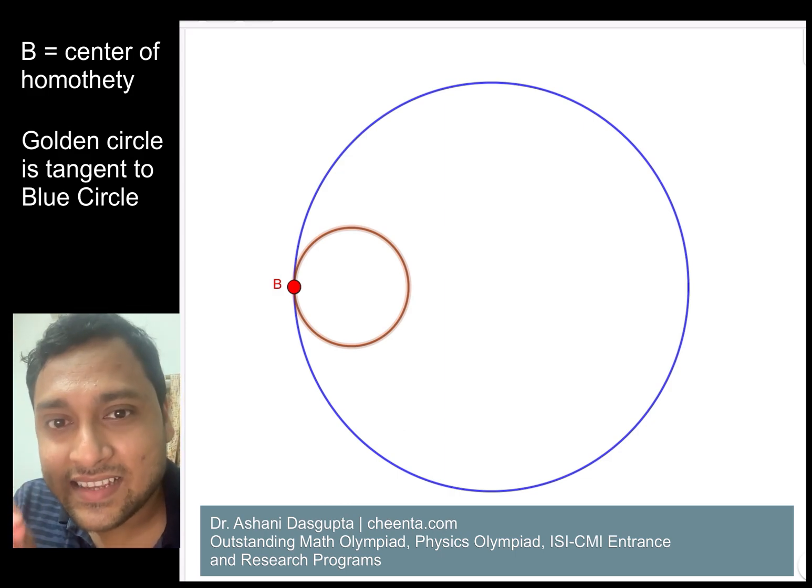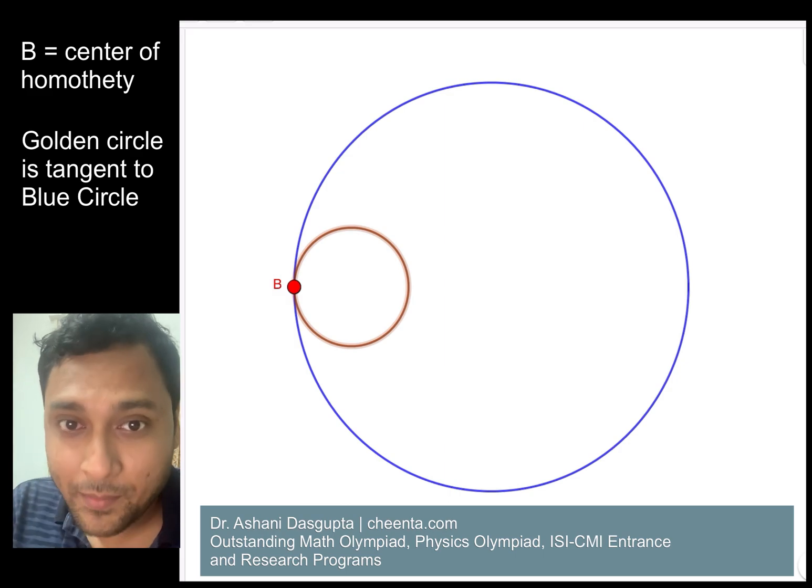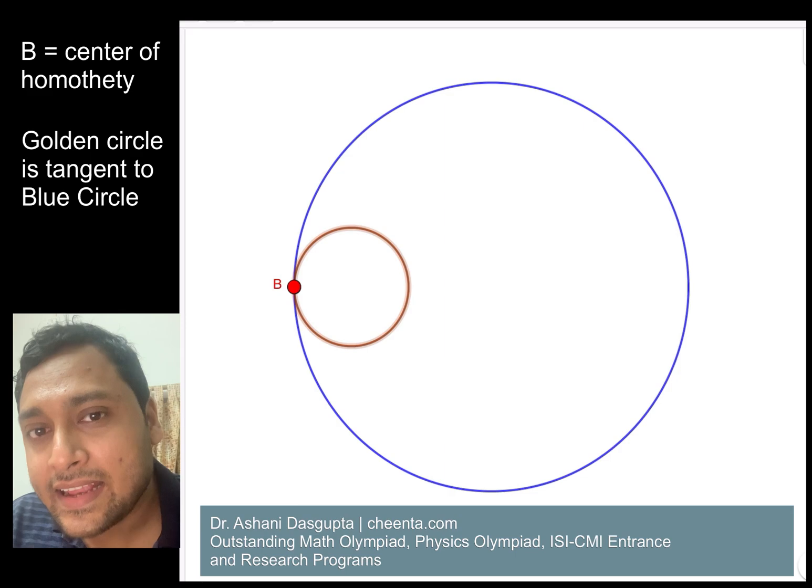So this golden circle is just touching the blue circle at one point, that is the point B. The main idea is this: that this golden circle will sort of grow into the blue circle.